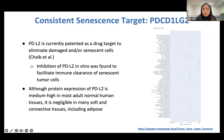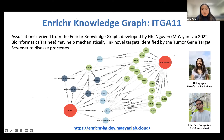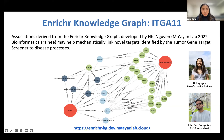Another tool I want to highlight is the Enricher Knowledge Graph, a prototype bioinformatics app initially developed by Neen Nguyen, another summer research trainee, and now being hardened by Errol Evangelista, a bioinformatician in the Mayan lab. Enricher KG can be used to see how genes might relate to each other as well as to certain phenotypes or diseases, which is especially useful for exploring novel targets. Shown here is ITCA11, one of the novel drug target candidates identified for senescent cell removal, and from the knowledge graph we can see a potential relation with the PI3K-AKT signaling pathway, a well-known driver of cellular senescence.